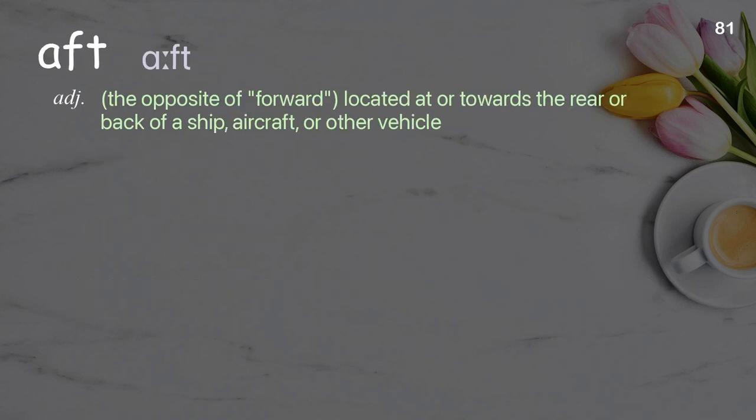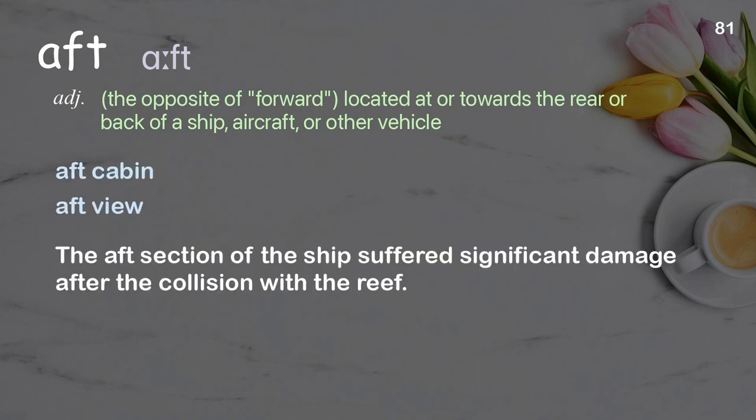Aft: the opposite of forward; located at or towards the rear or back of a ship, aircraft, or other vehicle. Examples: aft cabin, aft view. The aft section of the ship suffered significant damage after the collision with the reef.